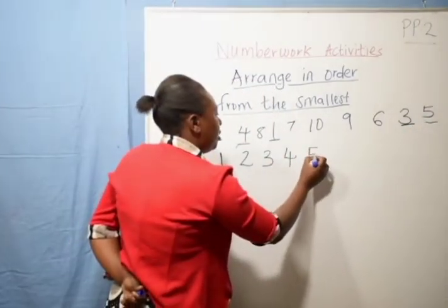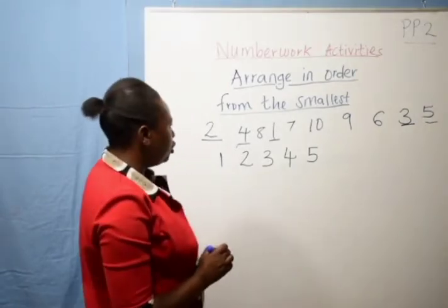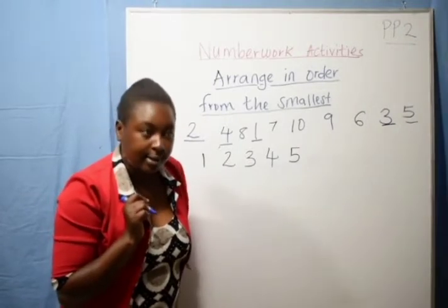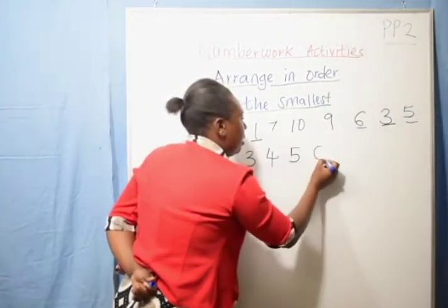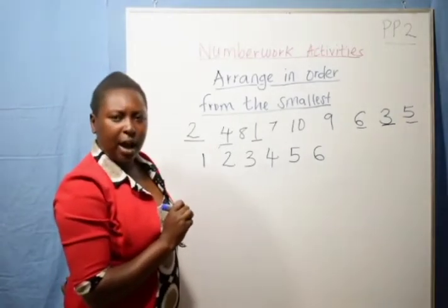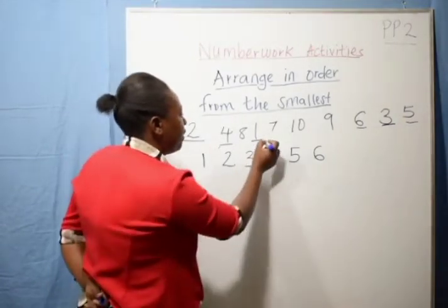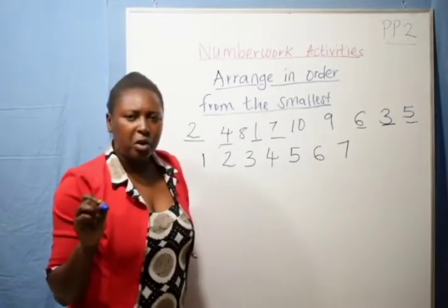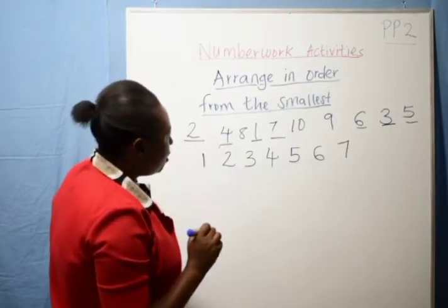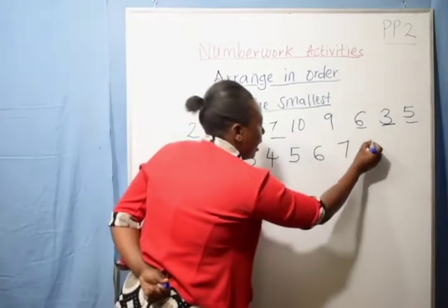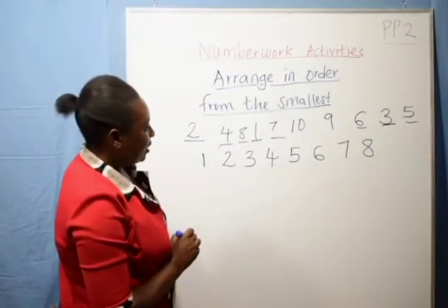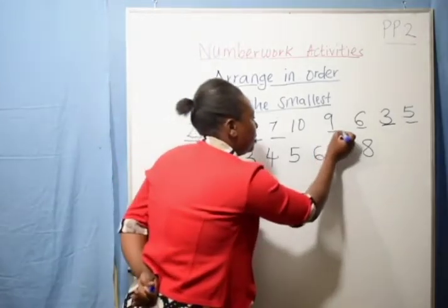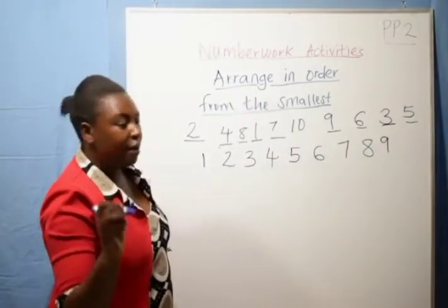Five — you write your number five. From number five, the next number is six — we have number six. After six, the next number is seven — seven is here, we write number seven. After seven we go to number eight — here is our number eight, I write my number eight. The remaining numbers are ten and nine. After eight is number nine — we write our nine. After nine we have number ten.